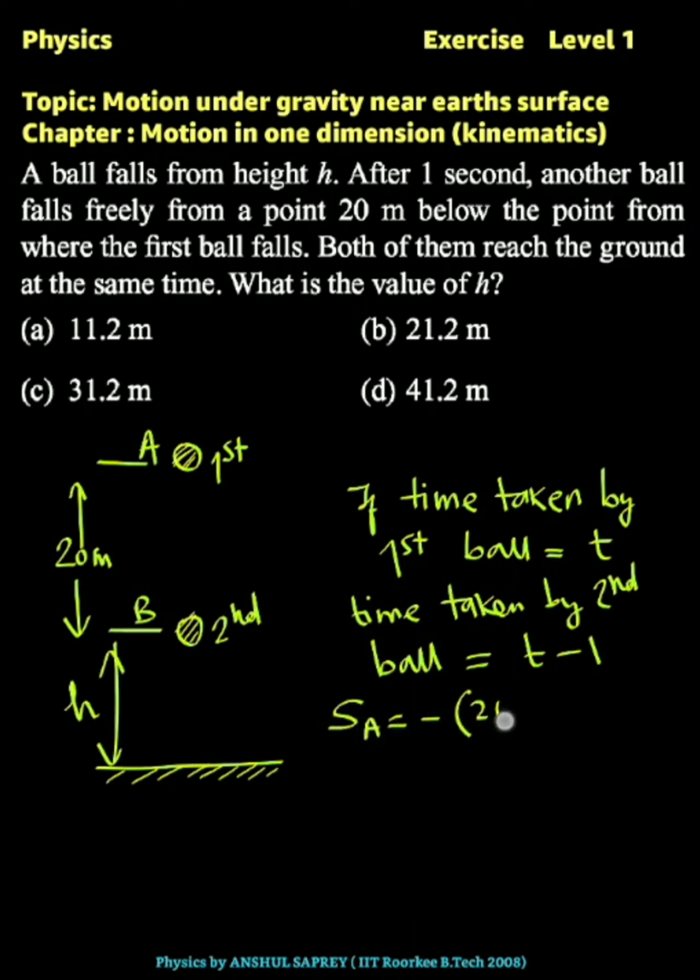Now the displacement for A is equal to minus (20 plus h), and displacement of B will be minus h. So we have to use s equals ut plus half a t squared, because u will be zero for both balls.